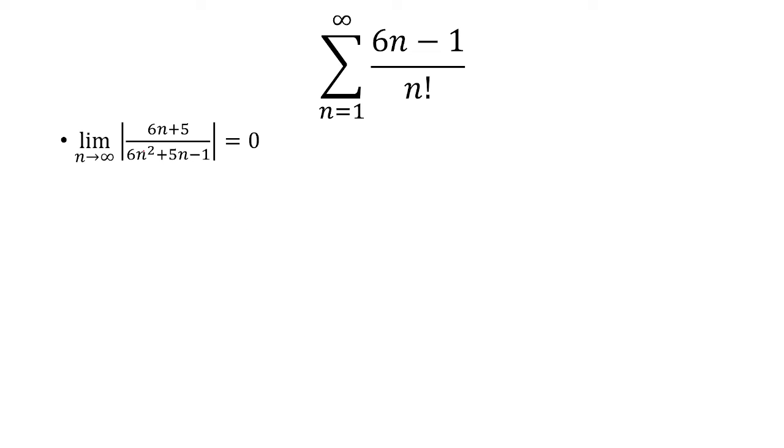Well, it's pretty obvious that this limit has to be 0 because when n is large enough, the most dominant term in the numerator is the 6n, and the more dominant term in the denominator is 6n squared. So we can essentially ignore the rest. And we know that 6n over 6n squared is basically 1 over n, and that's going to go to 0.